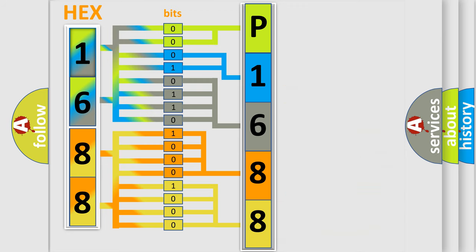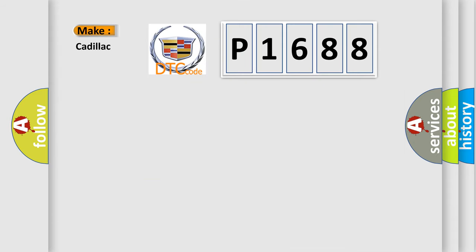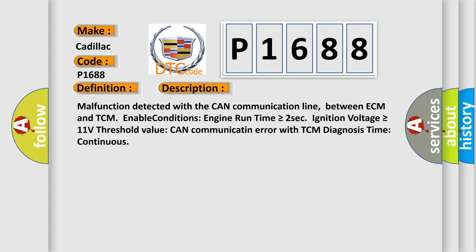We now know in what way the diagnostic tool translates the received information into a more comprehensible format. The number itself does not make sense to us if we cannot assign information about what it actually expresses. So, what does the diagnostic trouble code P1688 interpret specifically for Cadillac car manufacturers? The basic definition is: Lost communication with TCM.